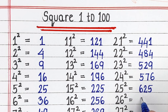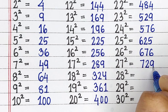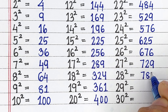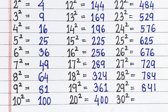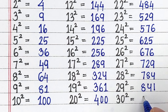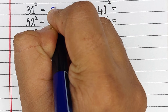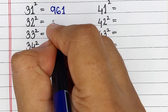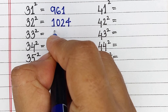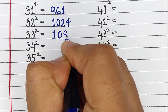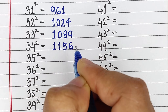Square of 26 is 676, square of 27 is 729, square of 28 is 784, square of 29 is 841, square of 30 is 900, square of 31 is 961, square of 32 is 1024, square of 33 is 1089, square of 34 is 1156.